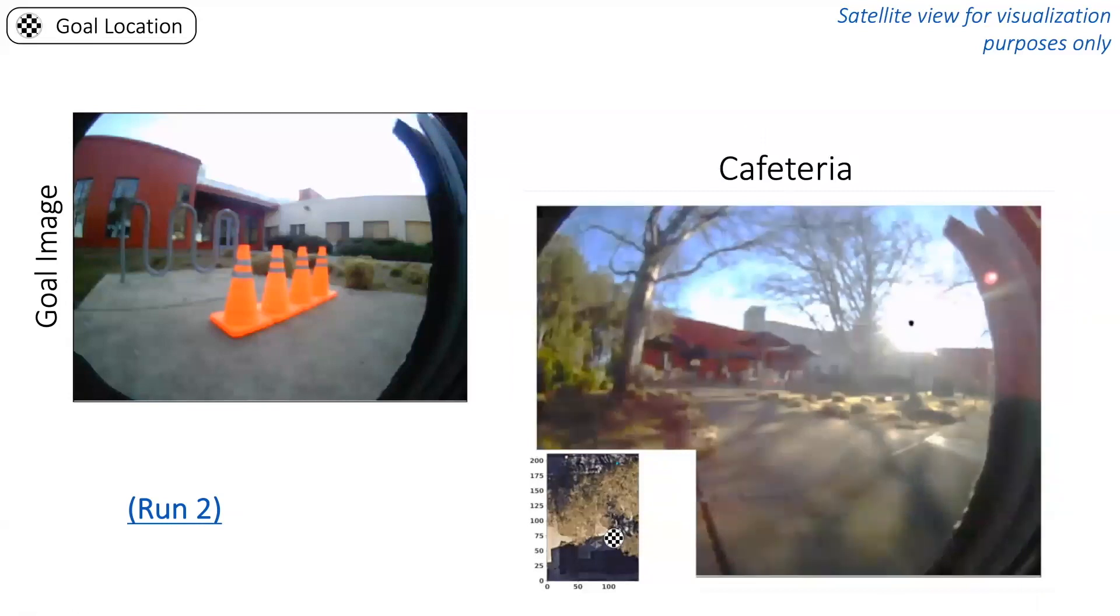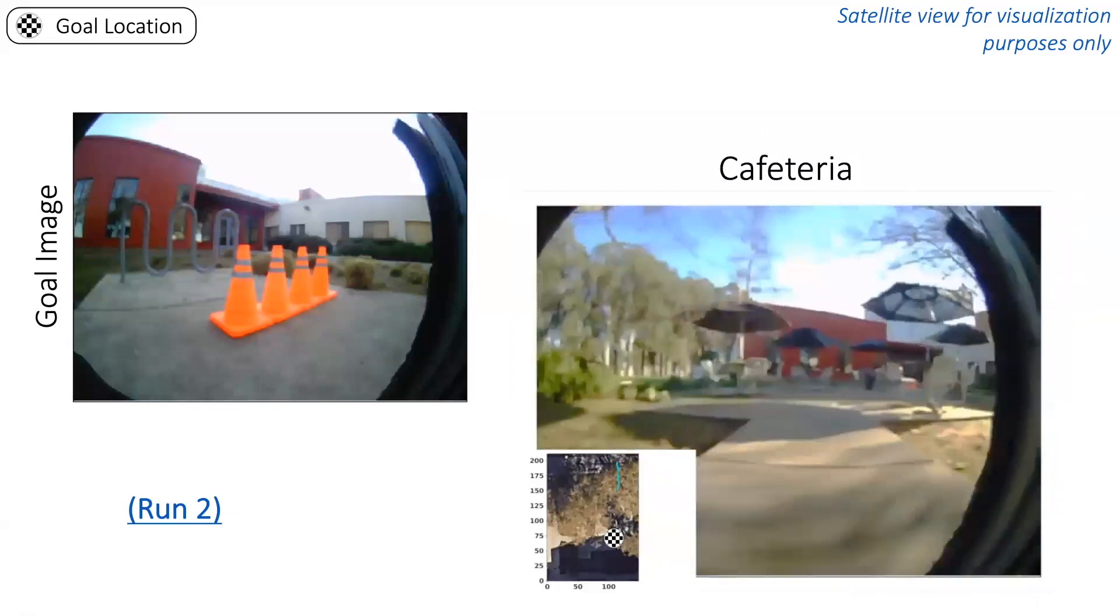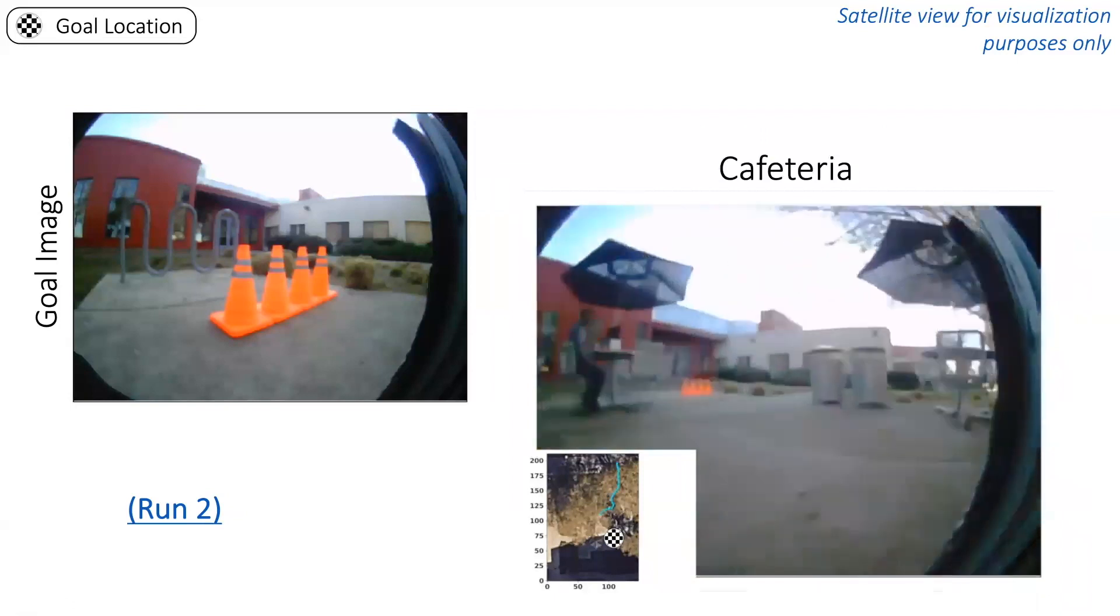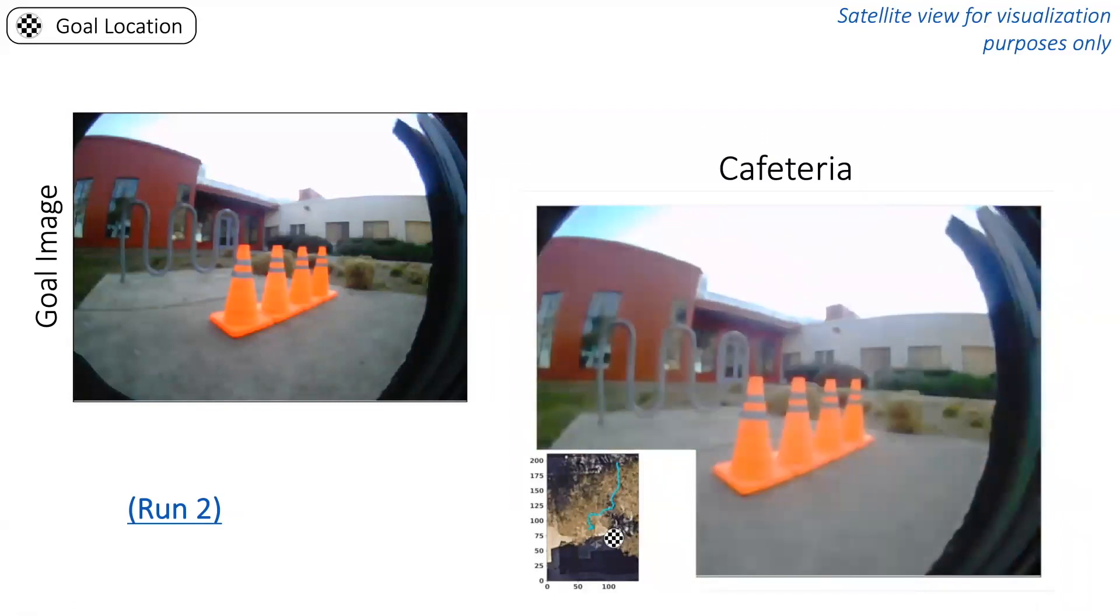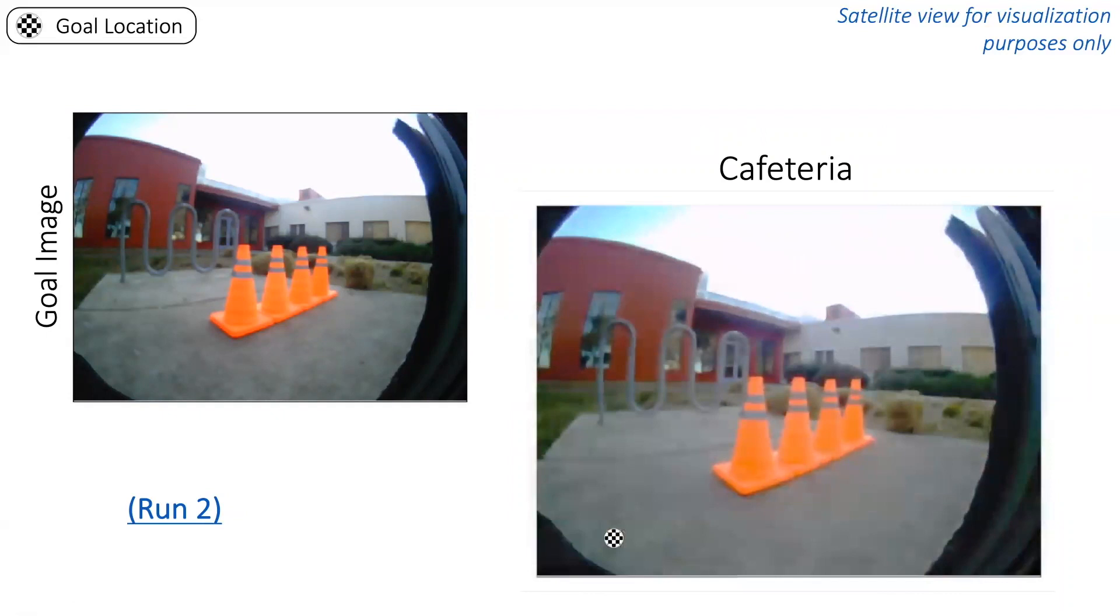This cafeteria scene is significantly tougher due to the numerous obstacles. RECON is able to use the learned goal representation to generalize its previous obstacle avoidance experience to this scene, navigating to the goal successfully.